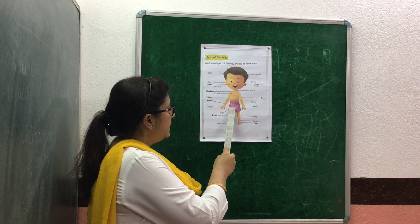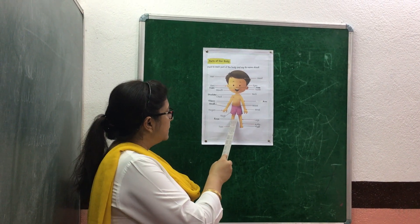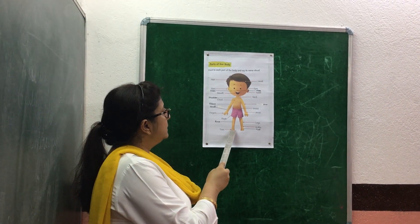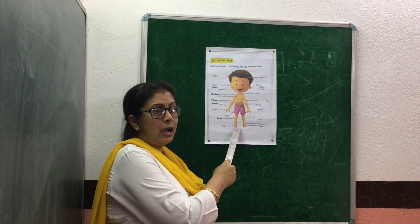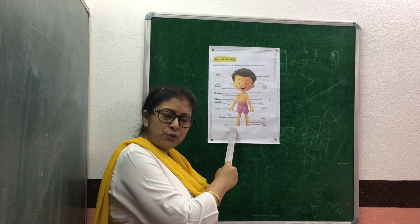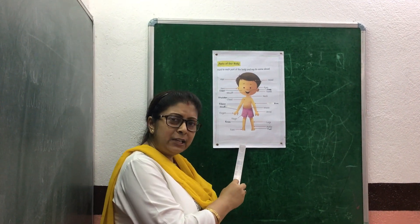This is thigh. And this is knee. And these are toes. How many toes do you have? We have ten toes.